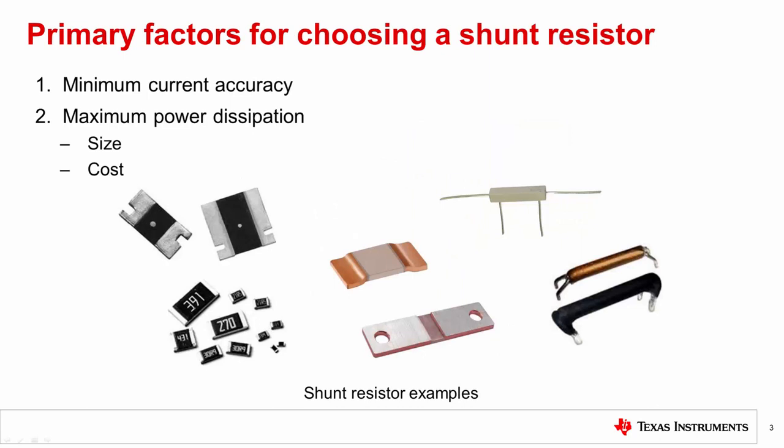Selecting the value of R_shunt is based primarily on two factors: the required accuracy at minimum load current and the power dissipation at maximum load current with its associated size and cost.